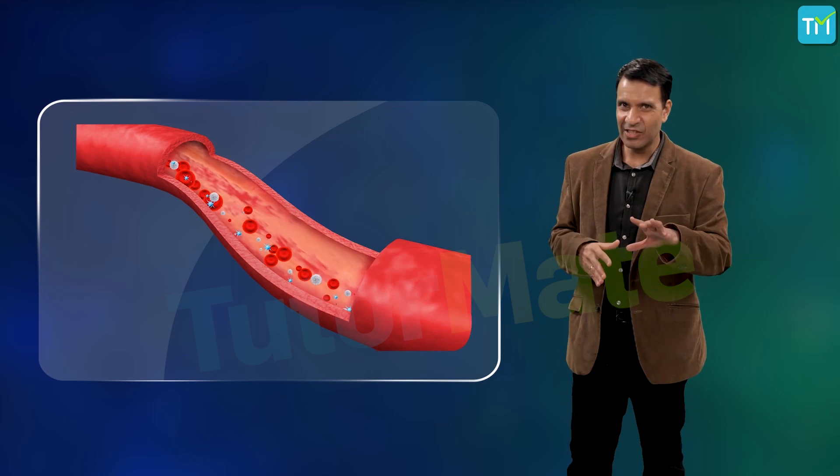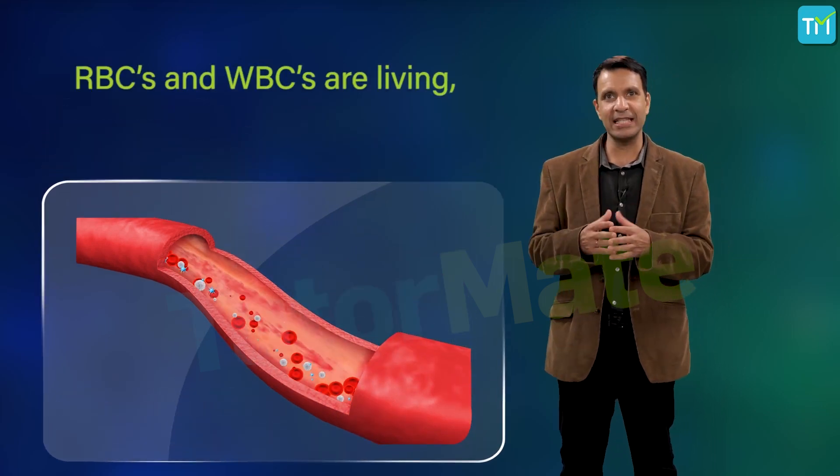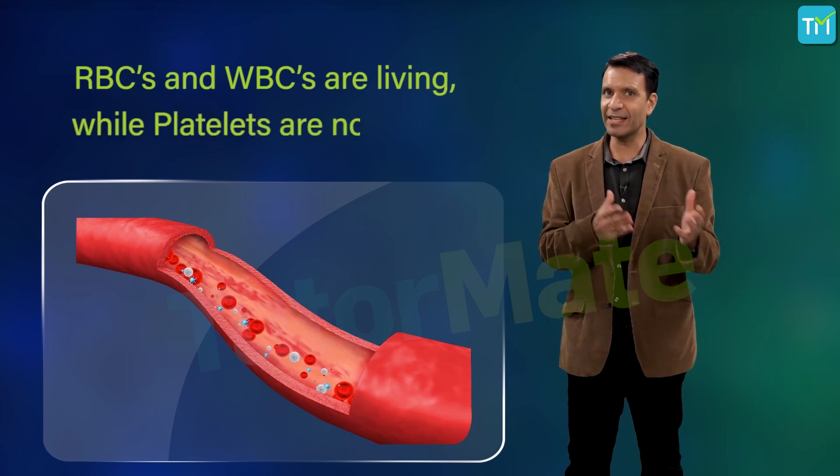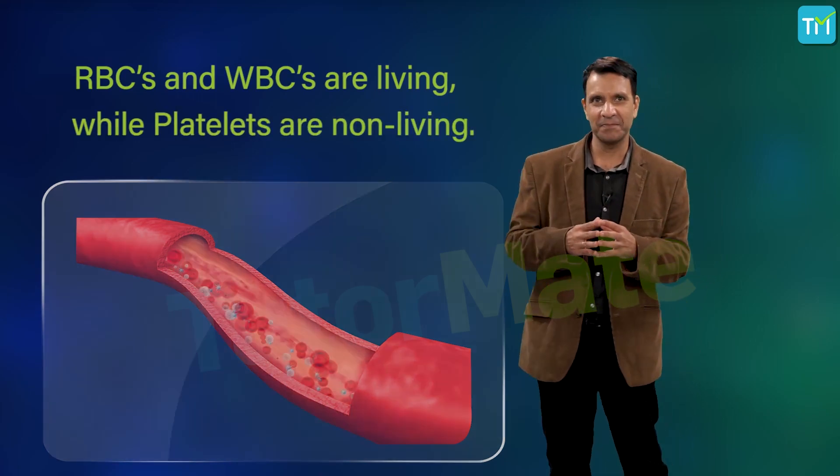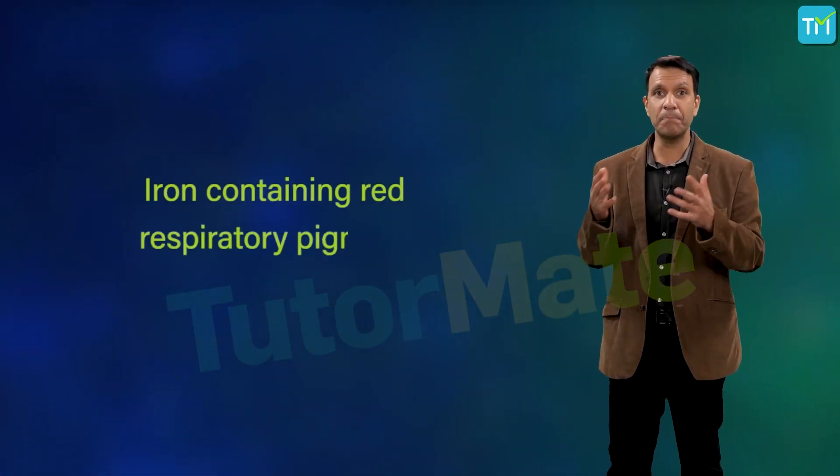Apart from RBCs, WBCs, and platelets, plasma also contains proteins, inorganic salts, and some hormones. RBCs and WBCs are living, while platelets are non-living. I'm sure you must have heard about hemoglobin.